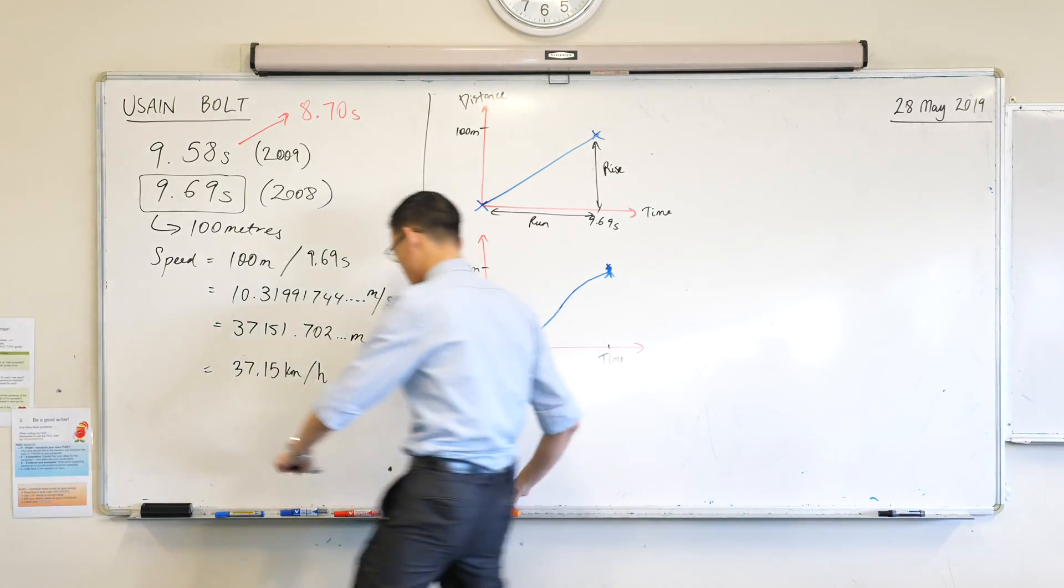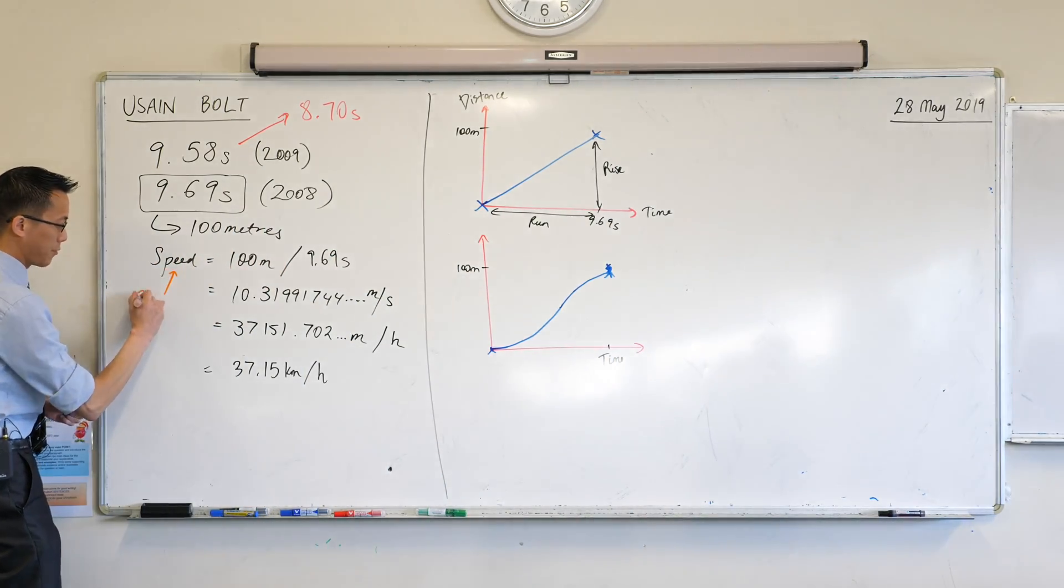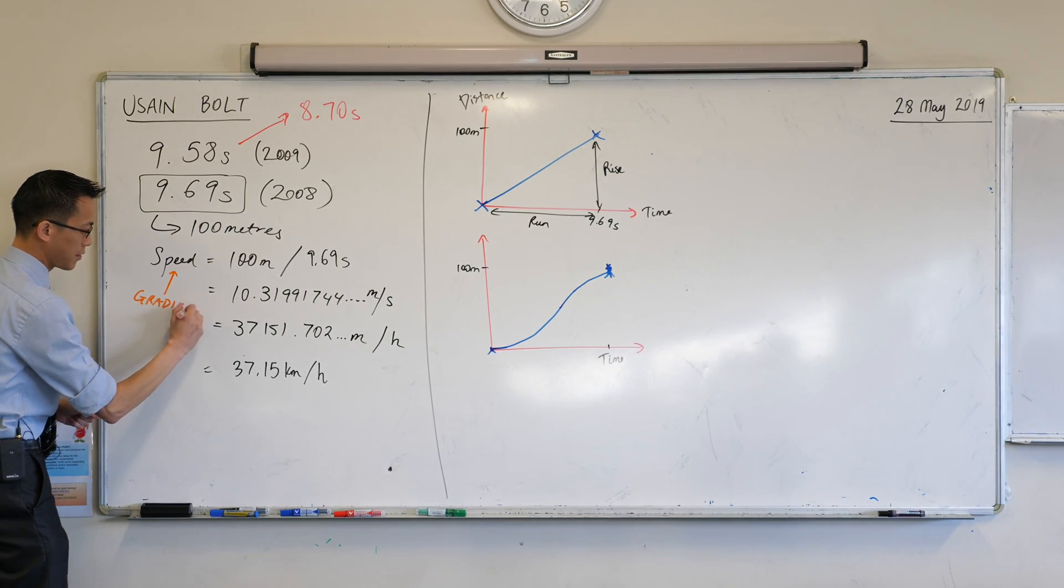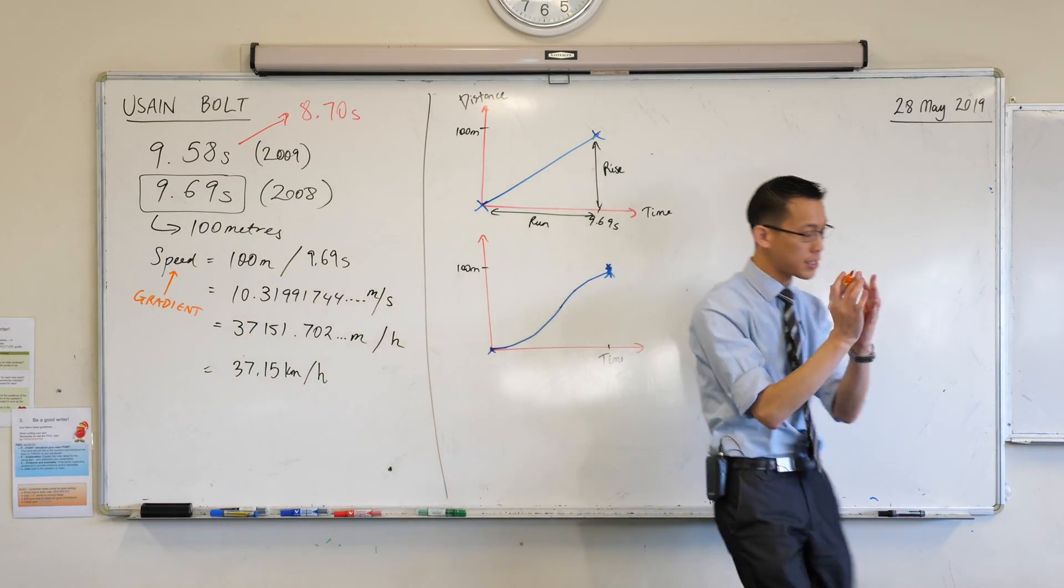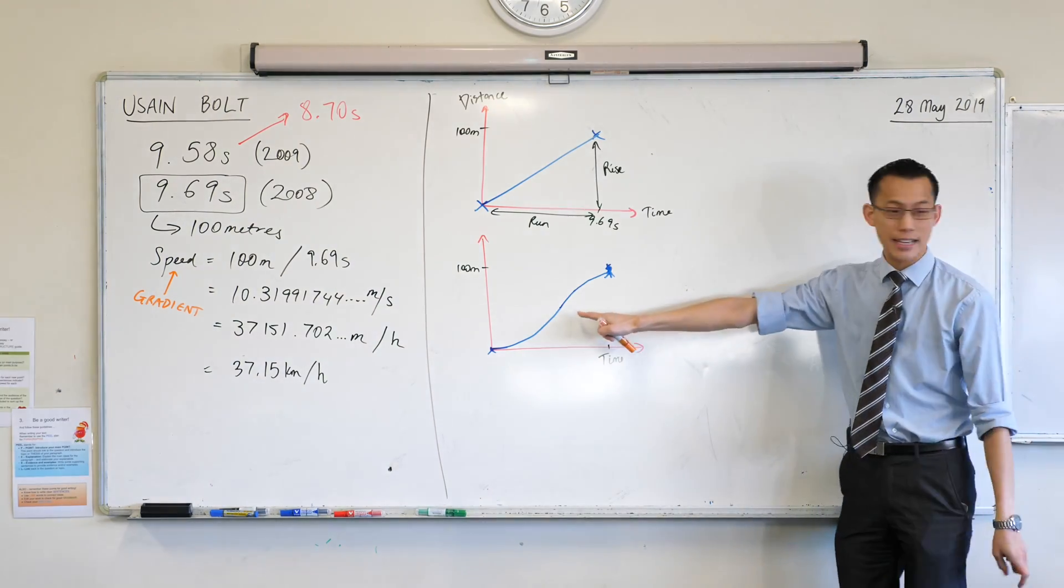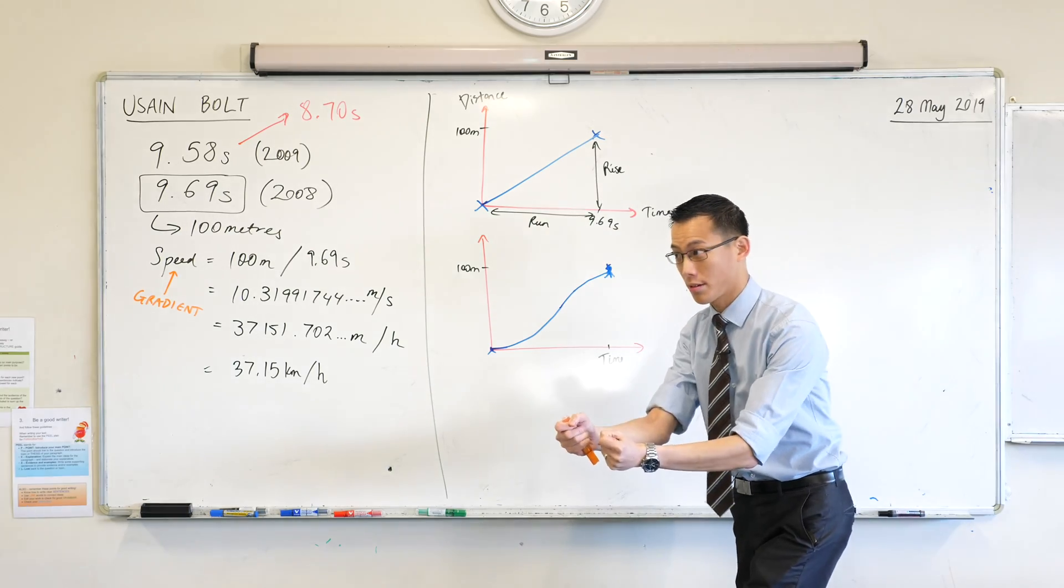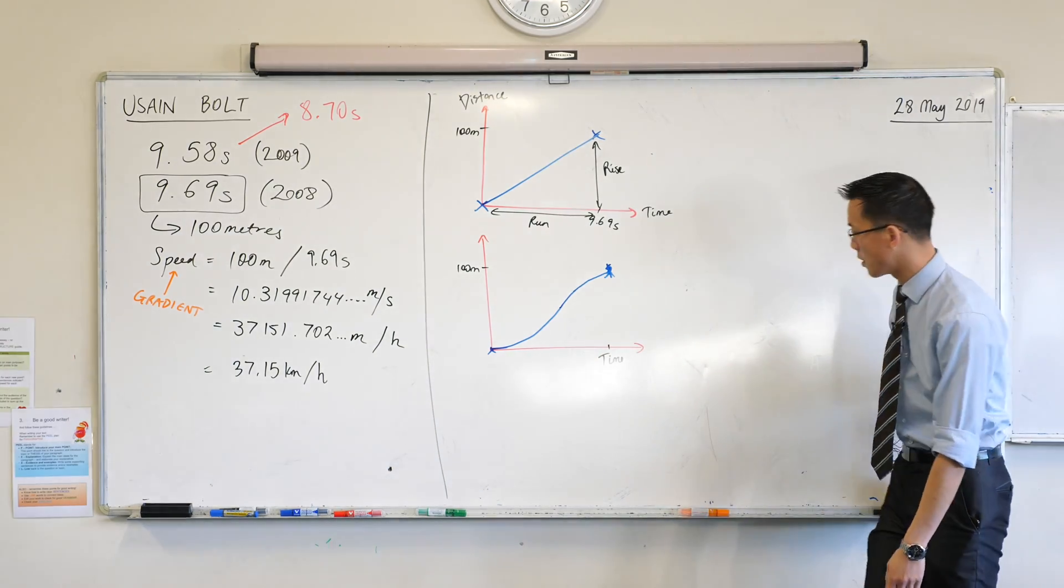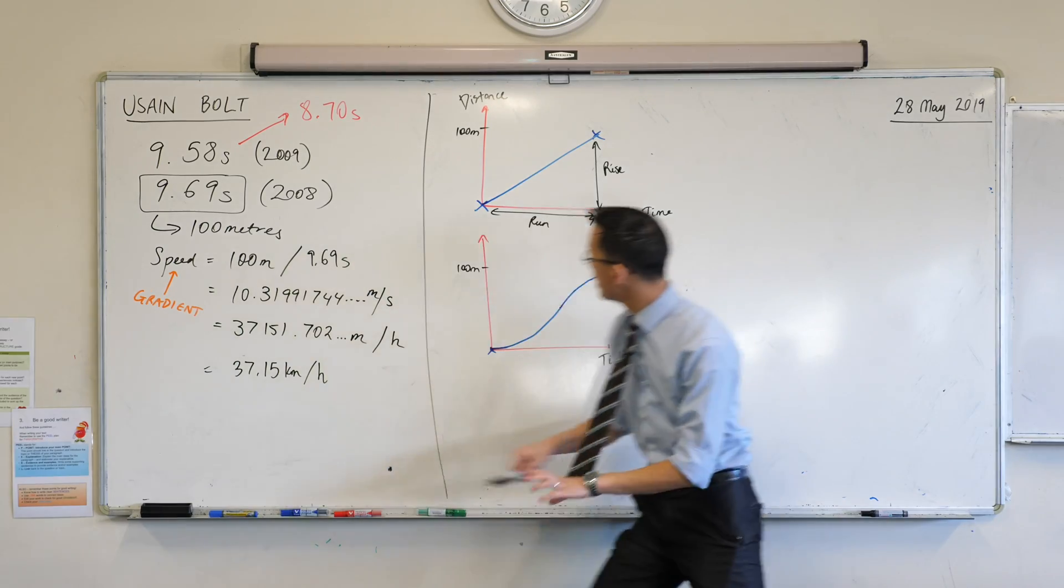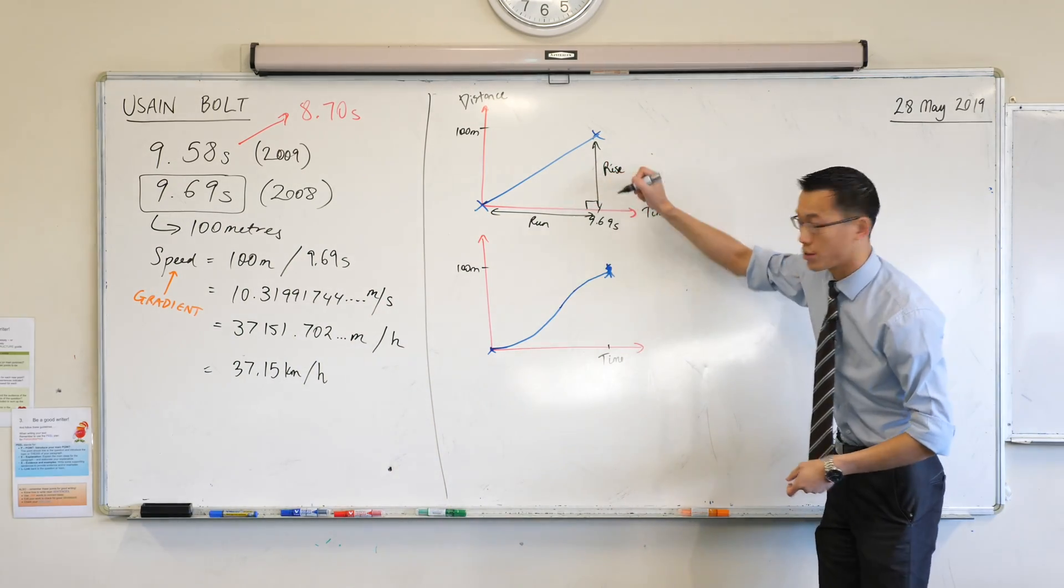So I'm actually going to put this, maybe you want to put it at the front as well. Where we were at speed, what we were really calculating was gradient. But we were calculating it over the entire journey, the entire 9.69. You can clearly see in the middle of all of our graphs is the point where he's going fastest. He's not doing it for the whole time.